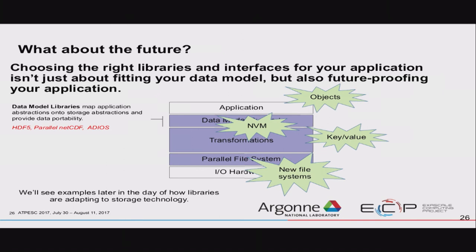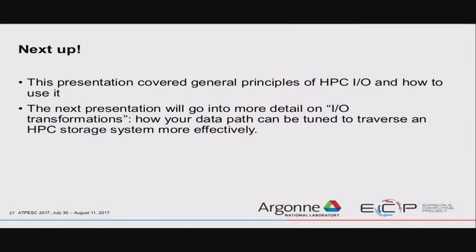Looking forward to the future — what are things going to look like ten years from now? We may have object storage systems. Non-volatile memory is already in the pipeline; if you look at the next machines for Argonne and Oak Ridge, it's on their webpages. There will probably be different file systems, maybe the same vendors developing new stuff. But the constant in all this is still these data model libraries — they're all very active, long-running projects and they will adapt to match whatever comes under them. That's the high-level, not-too-machine-specific overview of what's in these storage systems and what you might want to do about it.